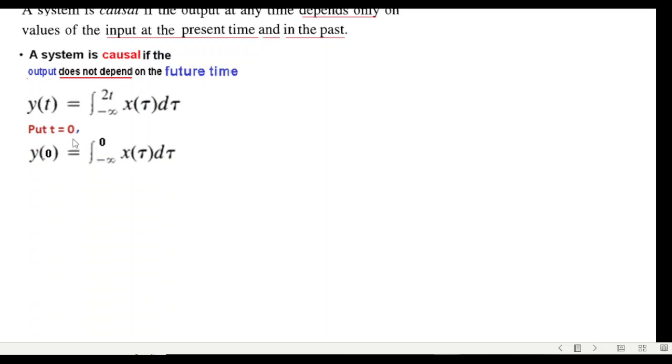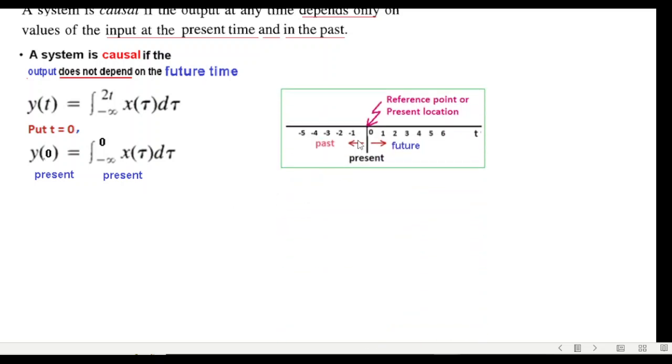First of all, putting t equals zero we can see that y(0) depends on from minus infinity to zero, and on the time scale this is present and this is actually present and past, not only present, because we are starting from minus infinity. So present and past, we are at this point and also up to minus infinity, so this is past. And so according to definition, okay, now according to definition this looks like a causal system, both present.